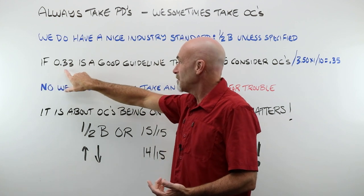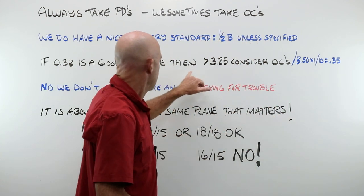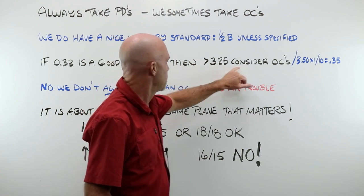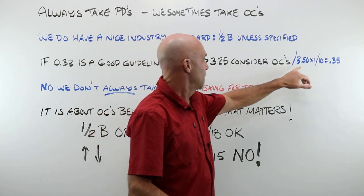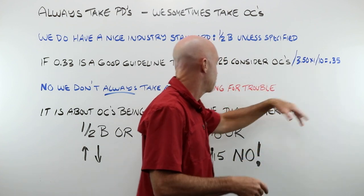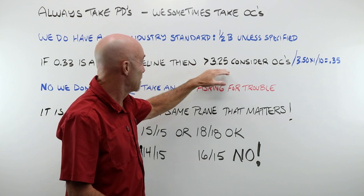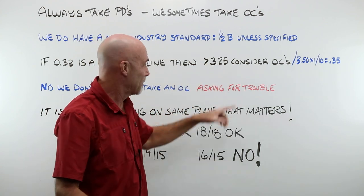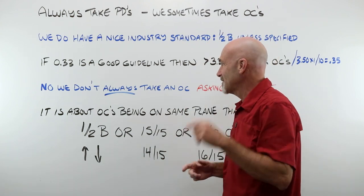If, big if, 0.33 is a good guideline, then, well, anything greater than 3.25, we could maybe consider OCs. 3.5 times more than one millimeter movement divided by 2 is about 0.35. 3.5 is greater than 3.3. So maybe this is a good point to start thinking about them, but it turns out that really has little to do with it.